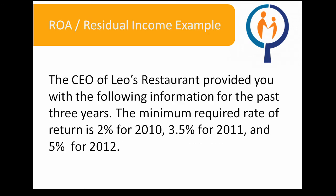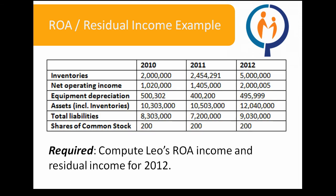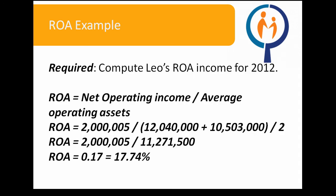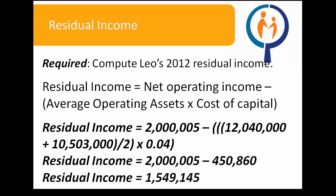Let's do an example. The CEO of Leo's Restaurant provided you with the following information for the past three years. The minimum required rate of return is 2% for 2010, 3.5% for 2011, and 5% for 2012. The required here is to compute Leo's ROA and residual income for 2012. Using the ROA formula of net operating income over average assets, we are able to find an ROA of 17.74%. Using the residual income formula, we are able to find a residual income value of $1,549,145.